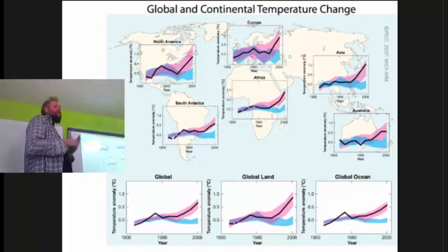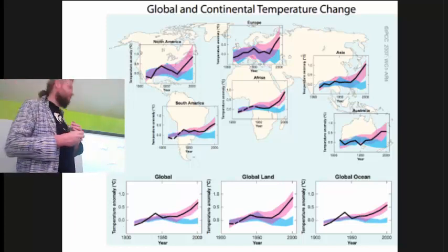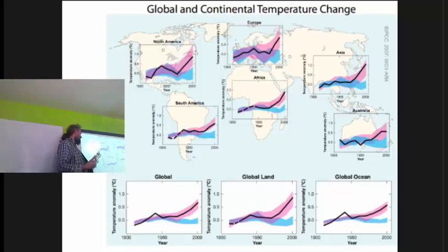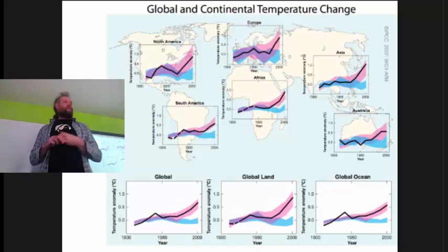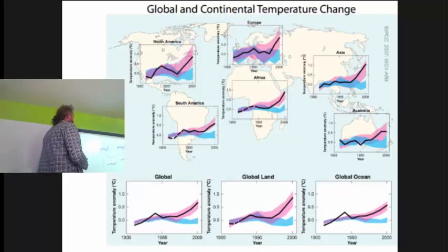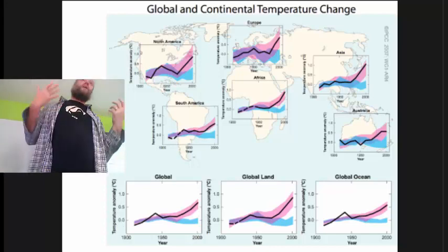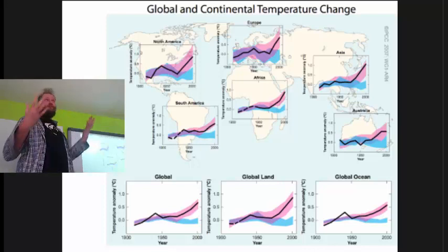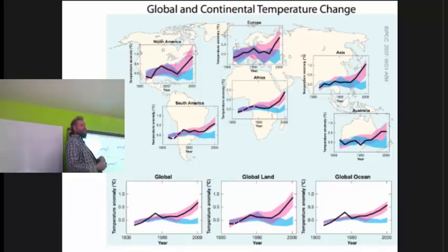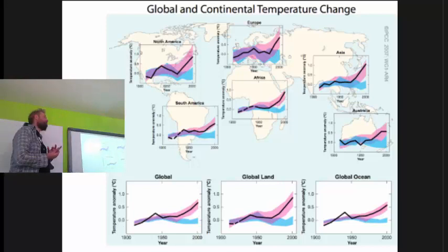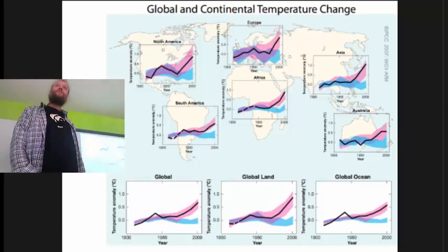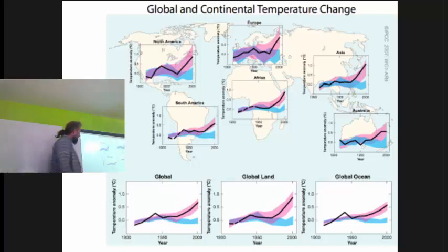And what they've done is they've run these models—there's about 30 of them across the world—from the 1990s starting point to the year 2000s. In the pink scenarios, they've put in everything they could think of that might possibly affect our climate. And what you see is that the 30 models do not agree with one another. There's a range of uncertainty about what could have happened in the previous century. These models are not perfect, but what you also see is that the black line is roughly in the middle of the pink range. So the models are not completely crazy. That was one set of runs.